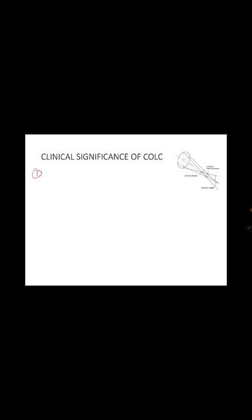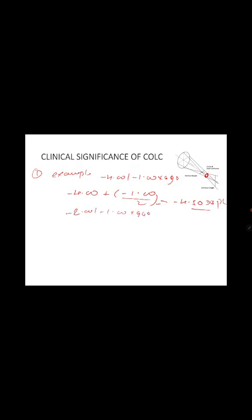The first clinical application: if a patient has minus four and minus one cylinder at 90 and wears a spherical contact lens occasionally, you prescribe the spherical equivalent: minus four plus (minus one divided by two) equals minus 4.50 DS. You prescribe this spherical equivalent because it places the Circle of Least Confusion at the retina. Similarly, for a patient with minus two and minus one cylinder at 90 who is uncomfortable with cylinder, you prescribe minus 2.50 diopters to place the Circle of Least Confusion at the retina.